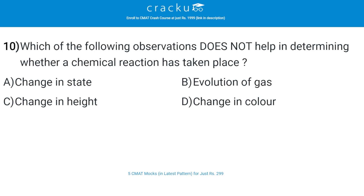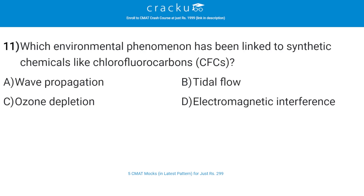Which of the following observations does not help in determining whether a chemical reaction has taken place? The correct answer is C — change in height.